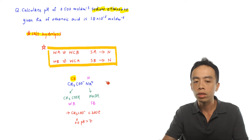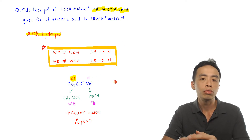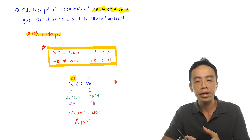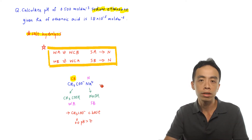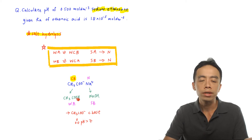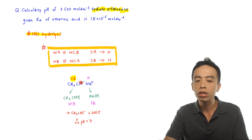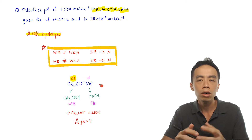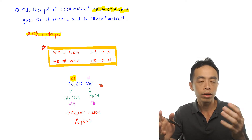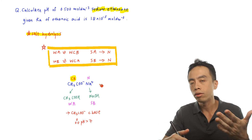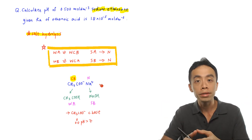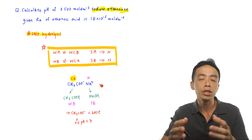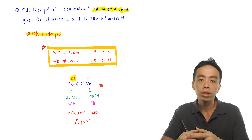Now we want to deduce the nature of sodium ethanoate. We treat it as a salt, which is the product of an acid-base reaction. CH₃COO⁻Na⁺ is formed from the neutralization reaction between CH₃COOH and sodium hydroxide. A salt is made up of a cation and an anion, each of which can independently be acidic, neutral, or alkaline. So we split the salt into its cation and anion and deduce the nature of each independently.